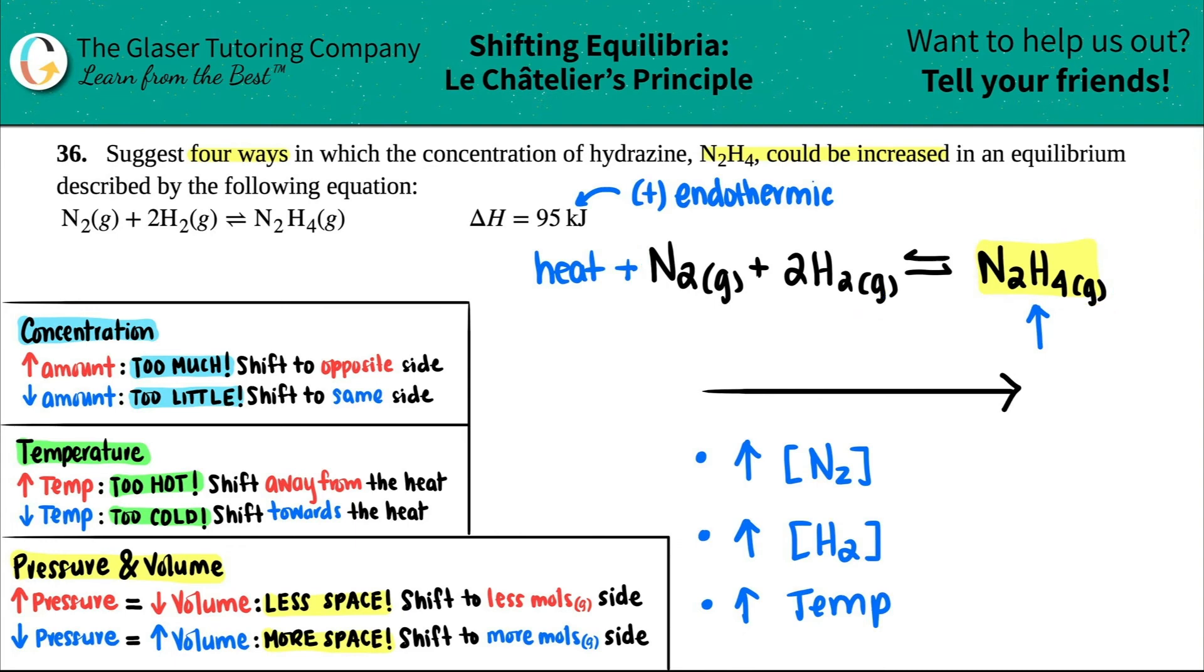Well, I got nothing in front of this N2. That means that I have one of them. And I have a two in front of the H2. These are both gases. So I take that into consideration. I got one plus two. I have a total of three moles of gas on my reactant side. But when I come over to the N2H4, I don't see a number in front of here. That means that there's one. And I only have one mole of gas on my product side. So this is less than this. The product side is less moles.